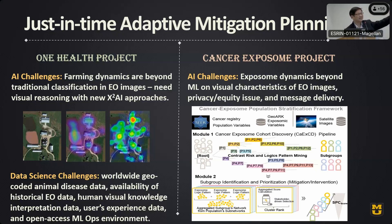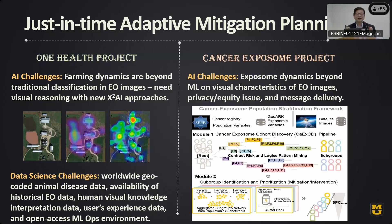We look at expert gaze activities and work on incorporating that reasoning. On the right-hand side you can see cancer exposome research showing how we find subgroups of patients and subgroups of locations, because there shouldn't be a single machine learning model applicable to every single case.